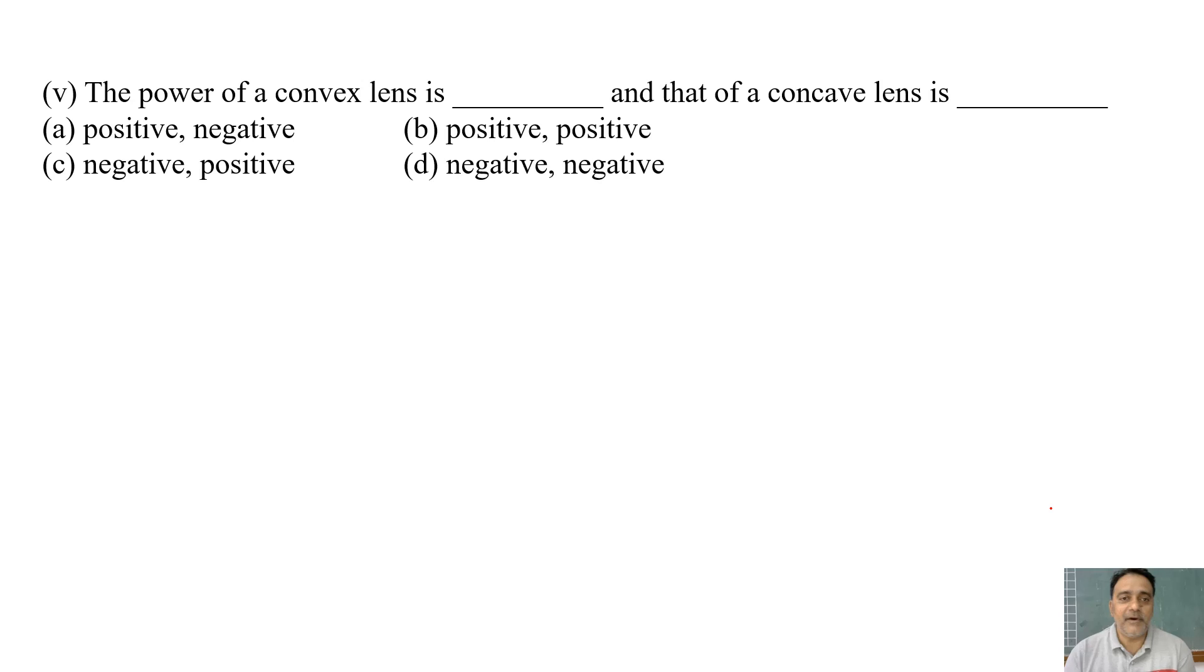Now the last question. The power of a convex lens is blank, and that of a concave lens is blank. So convex lens ka jo power hai wo positive hota hai, aur concave lens ka jo power hai wo negative hota hai. So the first option is the correct one, that is A.